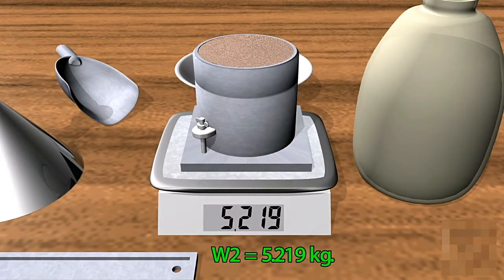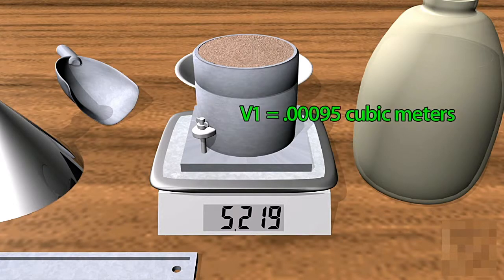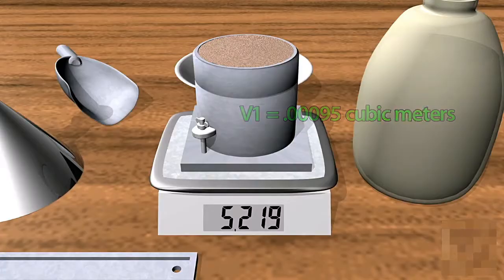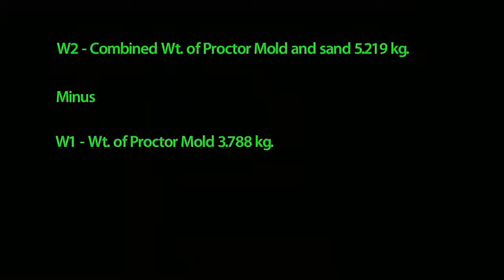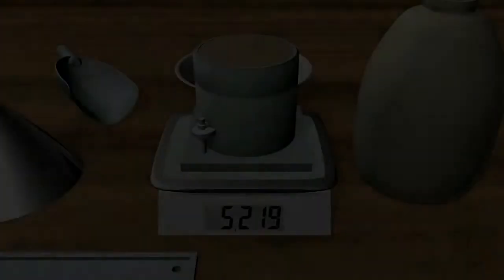We need to know the volume of the Proctor mold, in other words how much sand it can hold. This volume is 0.00095 cubic meters or V1. When we take W2, the combined weight, and subtract W1, the mold's weight, we then divide that value by V1, the volume. We get approximately 1506.3 kilograms per cubic meter. That's the dry unit weight of the sand.